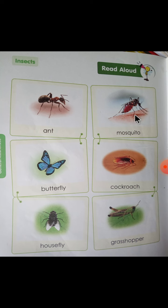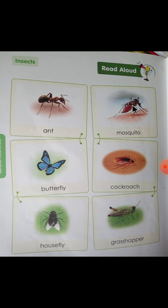Next is Mosquito. ये fly करती है और ज़मीन पर भी चलती है। M-O-S-Q-U-I-T-O, Mosquito, मतलब मच्छर। Ant मतलब चींटी, और Mosquito मतलब मच्छर। ये काटता है। जहाँ पर गंदगी रहती है, पानी रुक जाता है, वहाँ पर ये रहती है। Mosquito खूब काटती है।